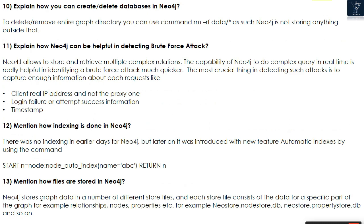Question 12: How is indexing done in Neo4j? There was no indexing in the earlier days of Neo4j, but later it was introduced with automatic indexes using the command: START n=node:node_auto_index(name='ABC') RETURN n.